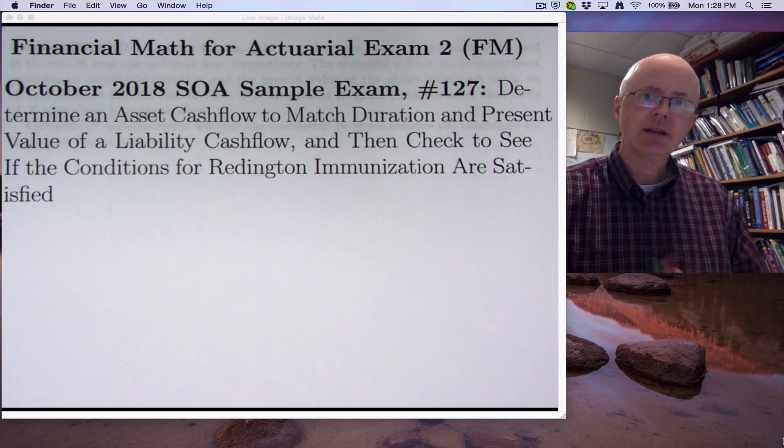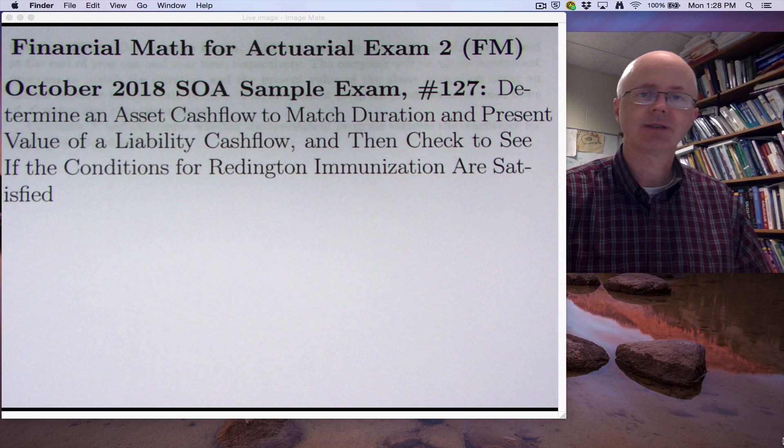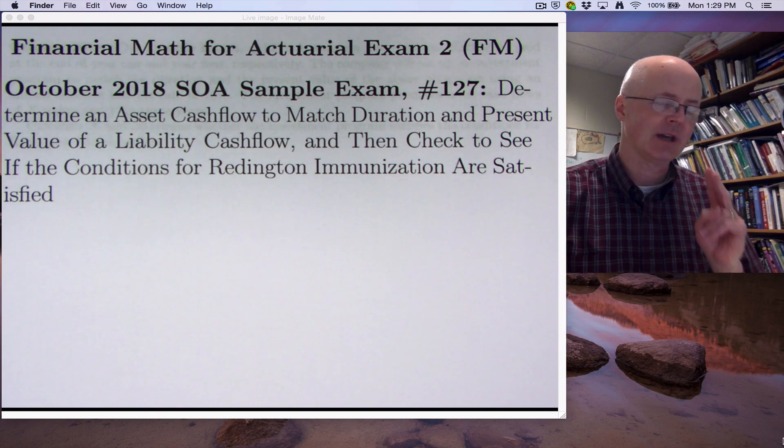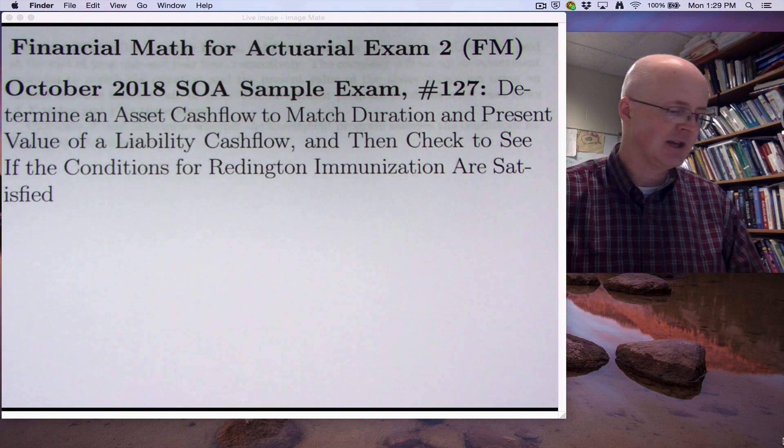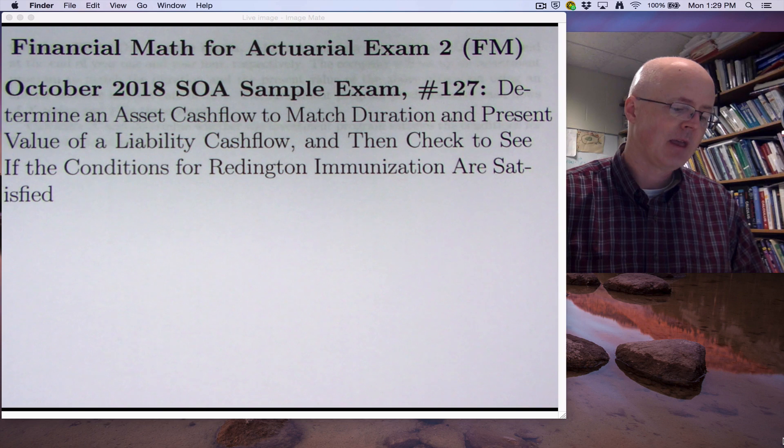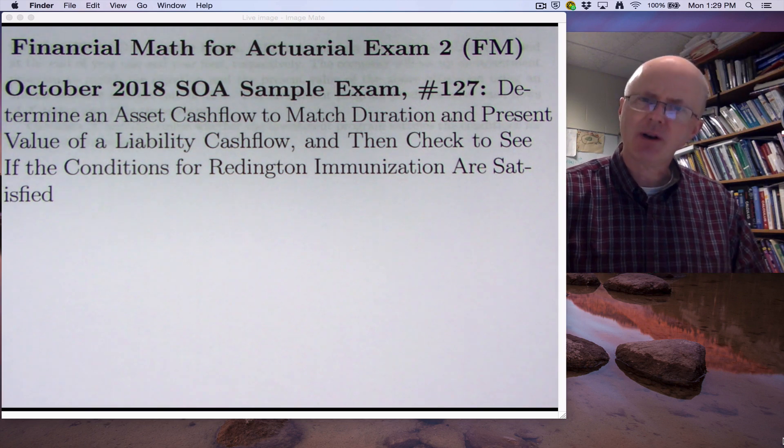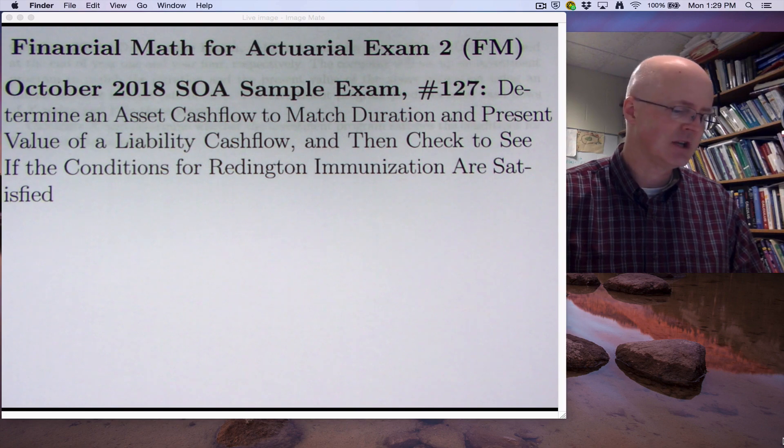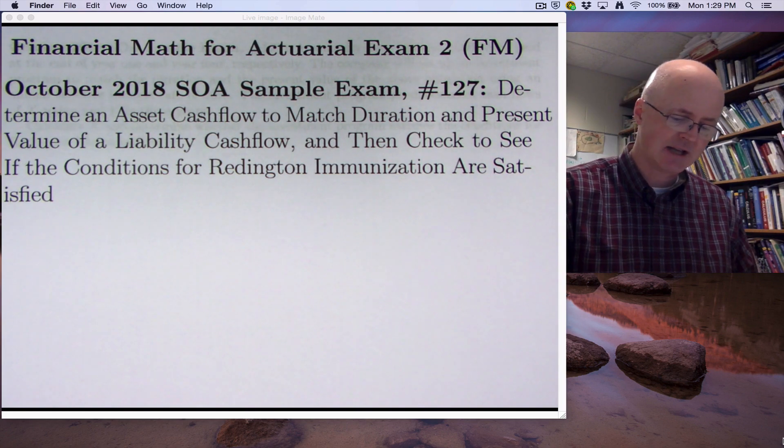In this video, we'll continue that. We're looking at October 2018 SOA sample exam problem number 127, determining first of all an asset cash flow to match two things: match the duration and present value of a liability cash flow. And then, as part of the problem statement, as part of the possible answers, we want to check to see if the conditions for Reddington immunization are satisfied or not.